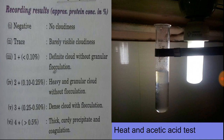Next, results: if there is no cloudiness after heating the urine sample, that is negative. Barely visible cloudiness is a trace amount. Definite cloudiness without granular flocculation is plus one. Heavy and granular cloud without flocculation is plus two. Granular cloud with flocculation present is plus three. Thick, curdy precipitate with coagulation is plus four. Here a picture of the heat and acetic acid test is given — look at the upper portion of the test tube where the cloud is formed, and it should be plus two: heavy but without flocculation.